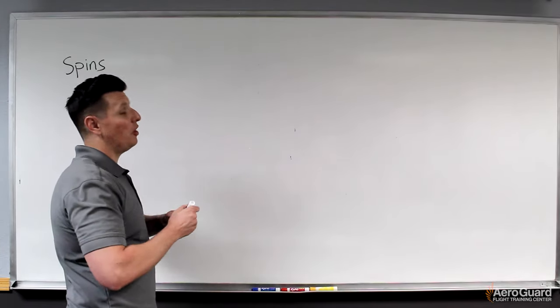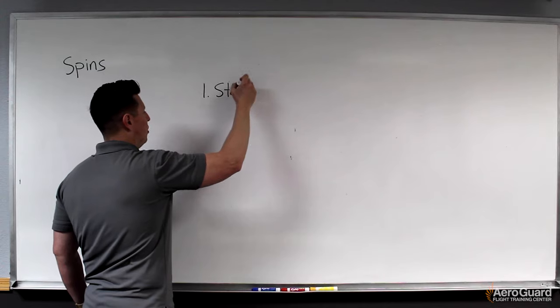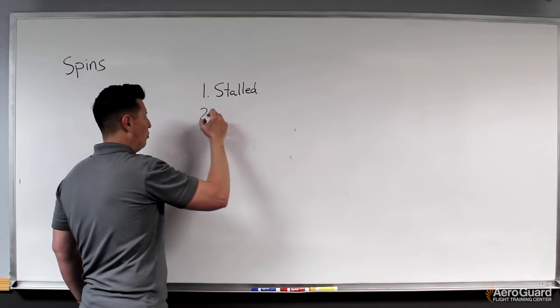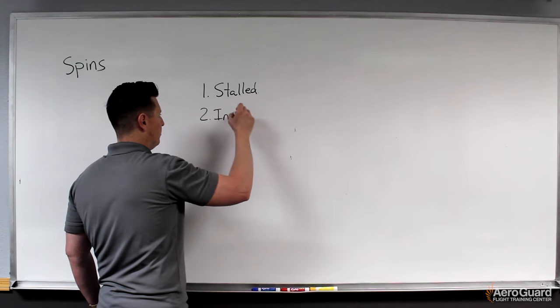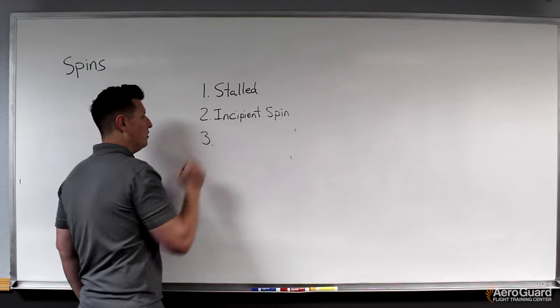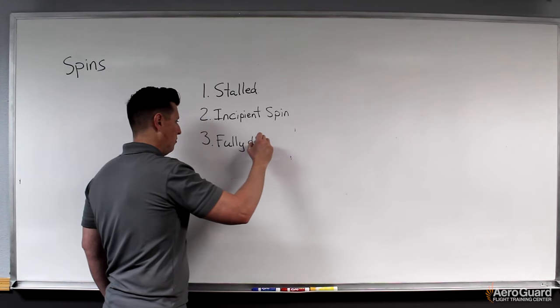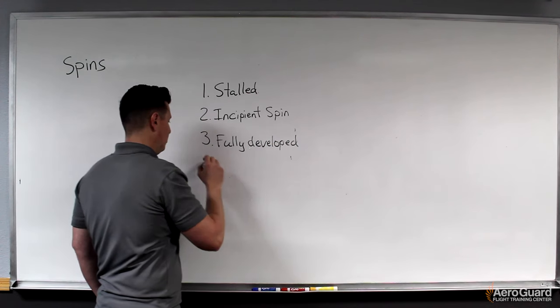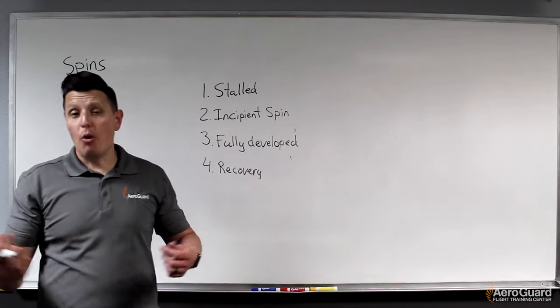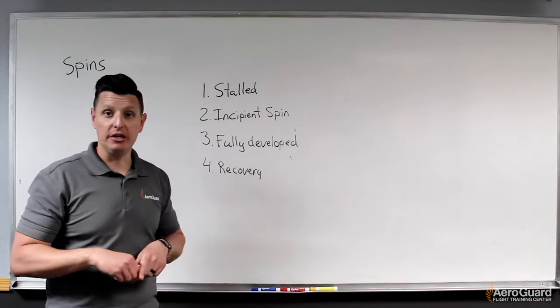To start with, the first main element of a spin is that we have to be stalled. So we need the airplane to be in a stalled condition. The second piece is what is known as an incipient phase. The third is a fully developed spin. And the fourth is the recovery.